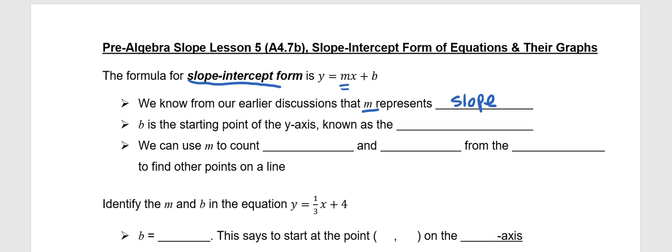The b is a starting point, but specifically it's a starting point on the y-axis. And that is known as the y-intercept.